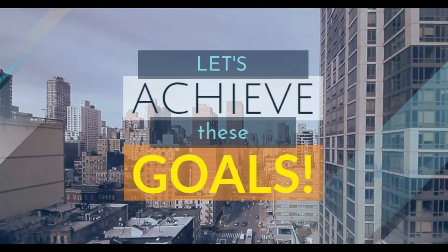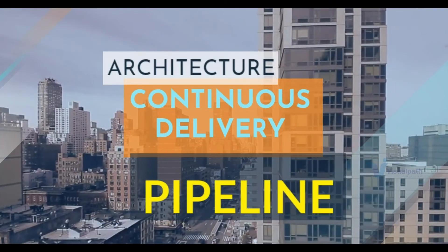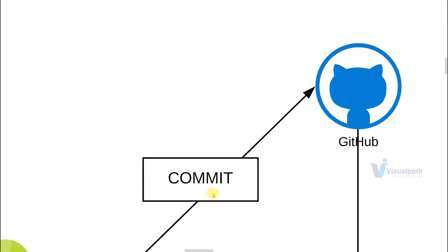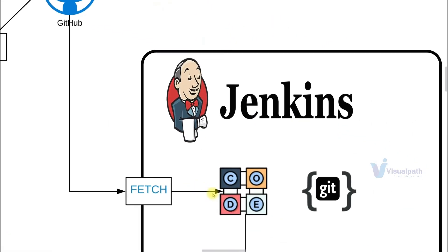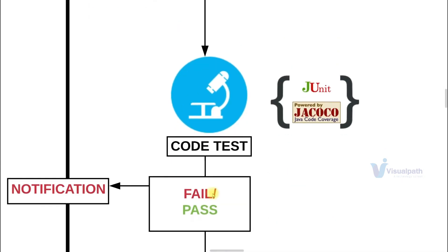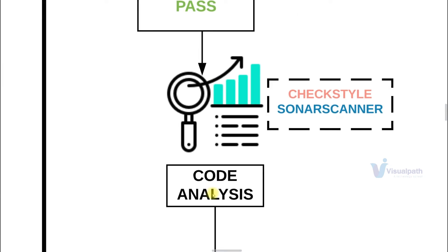Let's see the architecture of the continuous delivery pipeline. Developers are going to make regular code changes in an agile development process. They commit to the local git repository which syncs with a remote repository — we are going to use GitHub. Whenever there's a new commit on GitHub, Jenkins will detect that automatically, fetch all the changes, do unit tests, and based on whether it passes or fails, a notification will be sent. If it passes, it goes to the next level: code analysis.